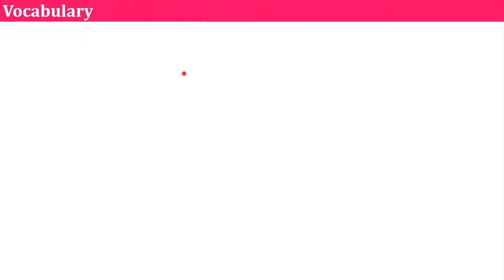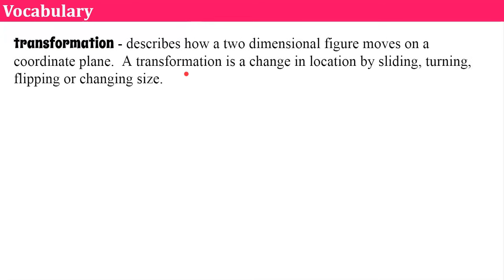Our vocabulary terms we're going to review before we begin. We start with transformation. This describes how a two-dimensional figure moves on a coordinate plane. A transformation can be a change in location by sliding, turning, flipping, or changing size. Today we're going to focus in this video lesson only on sliding. In our future videos in this playlist we'll learn about turning, flipping, and changing size.